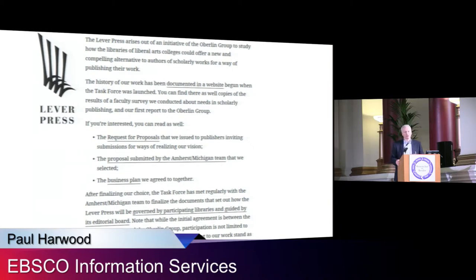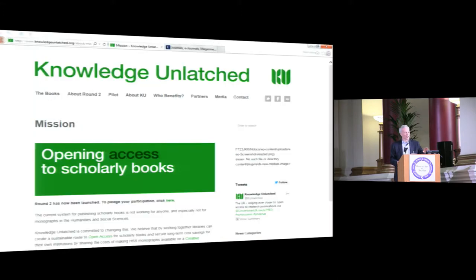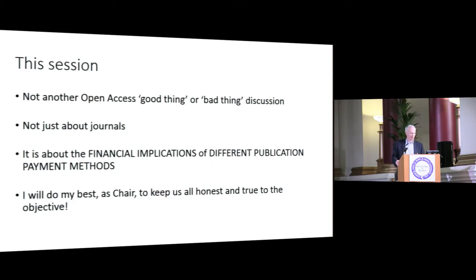This is another different kind of model — just institutions and colleges coming together to fund publications, and I think this is in the world of books as well. So we're not just about journals today; we're about any kind of content, anything that is published that needs in some fashion paying for. The session is not just about open access — it's about the financial implications of different publication payment methods. Keep that in your mind as we go.